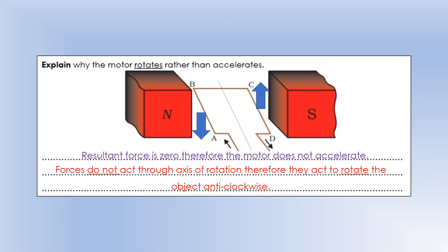There's a dashed line called the axis of rotation — the point about which it rotates or spins. The forces do not act through the axis of rotation; they are offset from it, which means they create a rotation. We'll explore that more when we look at moments. These two forces make it rotate anti-clockwise about the axis of rotation — that's why our motor spins.